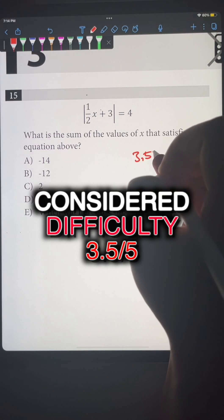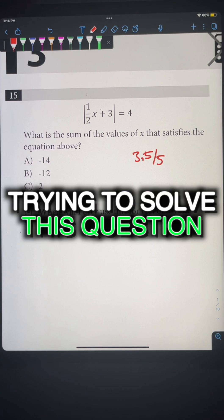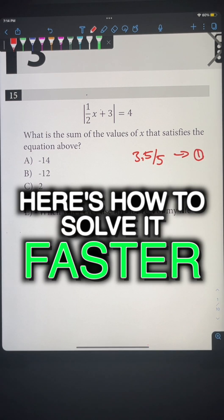This question is considered difficulty 3.5 out of 5, mainly because SAT knows that students are going to spend a long time trying to solve this question. But here's how you can turn it into difficulty 1 and solve it super quickly.